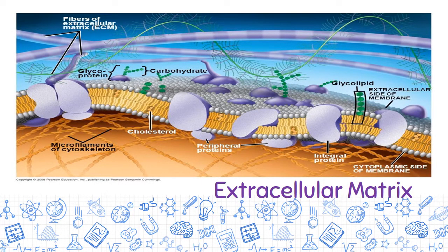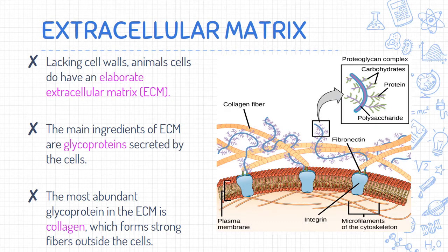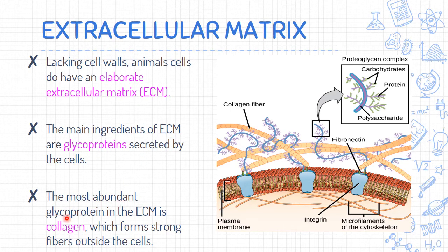Now we move outside the cell to discuss the extracellular matrix. This structure is important in animal cells, which lack a cell wall, so they have an elaborate extracellular matrix instead. The main ingredients of the extracellular matrix are glycoproteins secreted by the cells. The most abundant glycoprotein in the extracellular matrix is collagen, which forms strong fibers outside the cells.